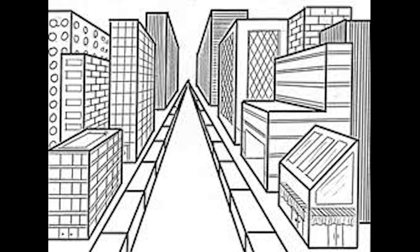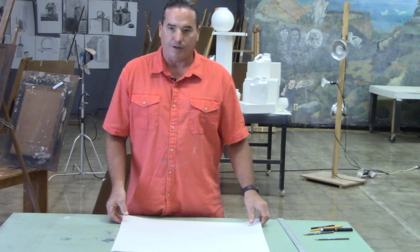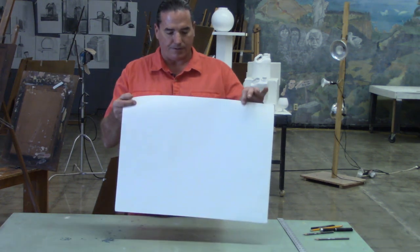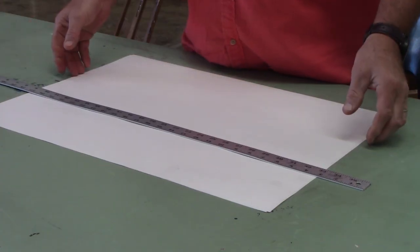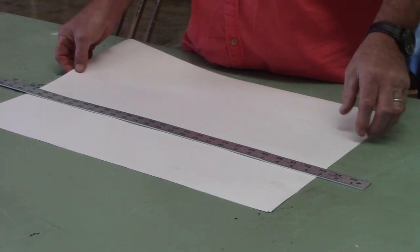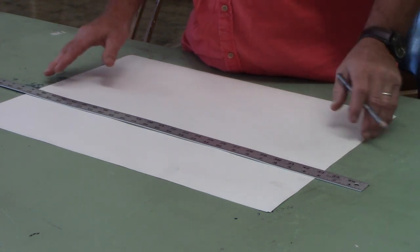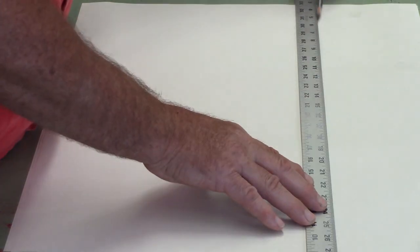We'll start off with one point perspective. You do have to have what is called a horizon line — that will be a line that simply defines and divides the picture plane. I'll be working on this paper here. I'm going to draw a line across the paper, and I'll utilize what is known as the rule of thirds to divide my composition — we'll save that for another day. So I'll draw a line which is roughly at the top one-third mark, and this will serve as what is known as the horizon line.